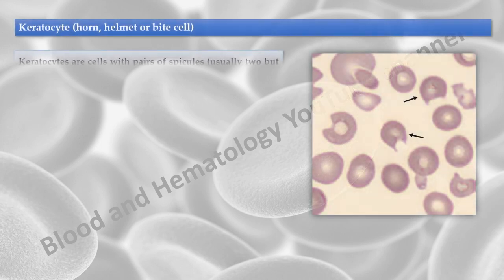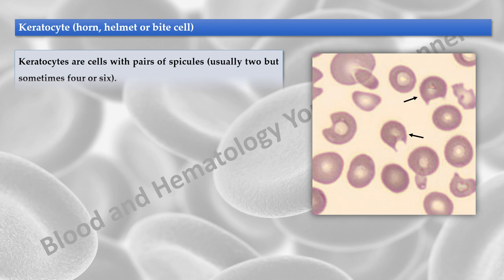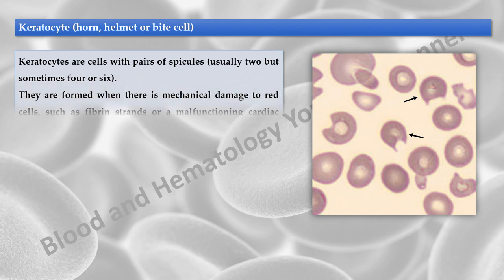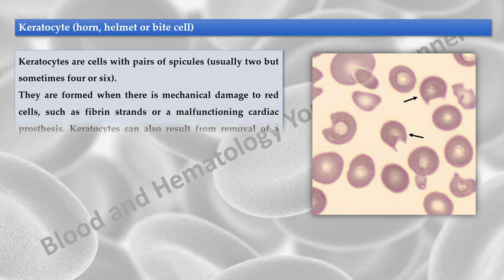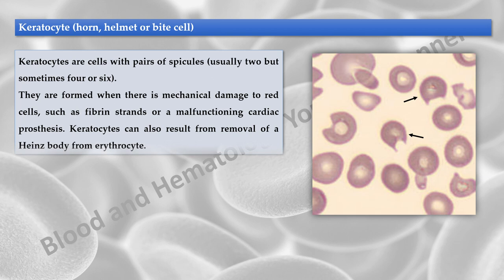Keratocytes are erythrocytes with pairs of spicules, usually 2 but sometimes 4 or 6. They are formed when there is mechanical damage to red cells, such as fibrin strands or a malfunctioning cardiac prosthesis. Keratocytes can also result from removal of a Heinz body from an erythrocyte.